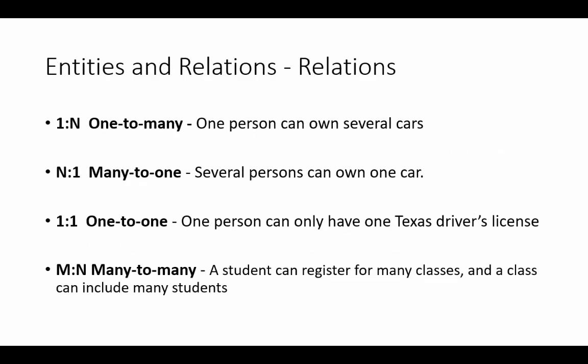Databases have different relations. Sometimes they're one-to-many, sometimes many-to-one, other times one-to-one, and finally we have many-to-many. An example of a one-to-many would be one person that has several cars. In a many-to-one relation, we could have several persons that own one car. In a one-to-one relation, one person can only have one Texas driver's license, or one person has one social security number. A many-to-many relation example would be a student that can register for many classes, and a class that can include many students.